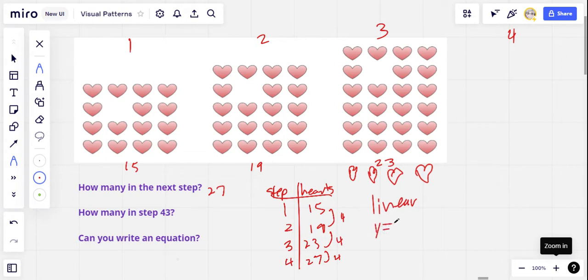So with a linear pattern, we can use this equation for a line y equals mx plus b to model it. And what's usually the slope, the m here, is going to be our change from step to step. So that's 4x, y equals 4x. The plus b we're going to use to make it work with the numbers we actually have here.